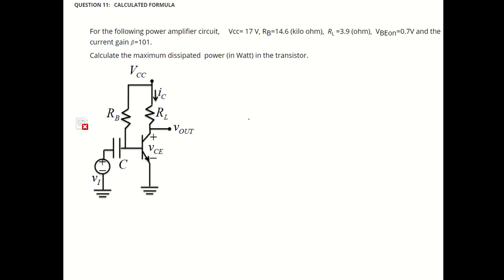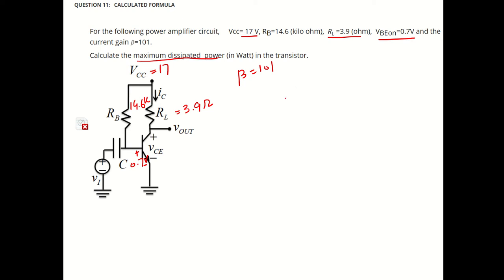This is a similar kind of circuit. Again, the VCC value is 17 volt, RB value is 14.6 kilo, RL value is given as 3.9 ohm, and VBE on — the turn-on voltage — is 0.7. Sometimes it will be mentioned, and if it is not mentioned, you can take the default value of 0.7. Beta is 101. The given information: calculate the maximum dissipated power.